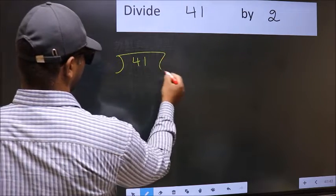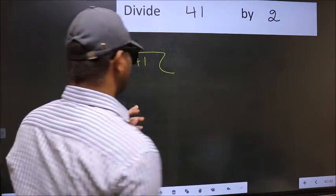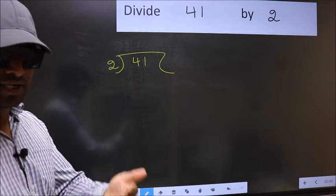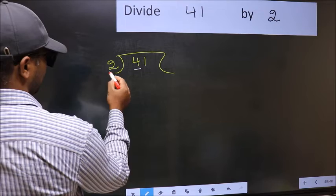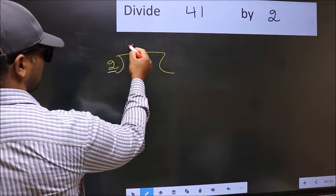2 here. This is your step 1. Next, here we have 4, here 2. When do we get 4 in 2 table? 2 2s, 4.